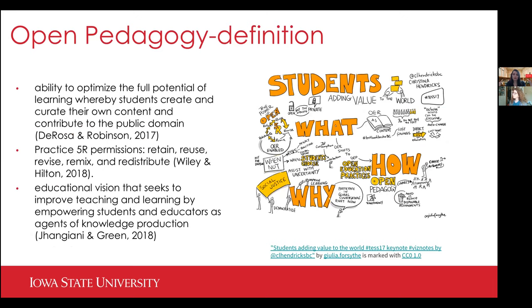Under the open educational practice umbrella, we focus on open pedagogy, which is defined as an ability to optimize the full potential of learning whereby students create and curate their own content and contribute to the public domain. They also practice the 5R permissions: retain, reuse, revise, remix, and redistribute. This is an educational vision that empowers students and educators as agents of knowledge production. It's important that we focus on student agency and empowerment.